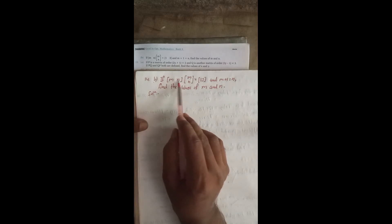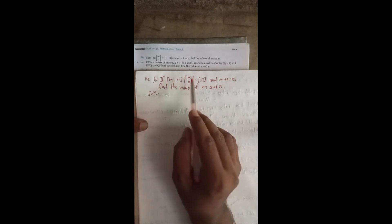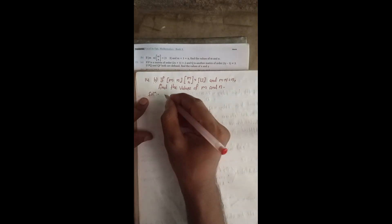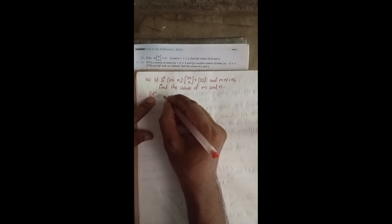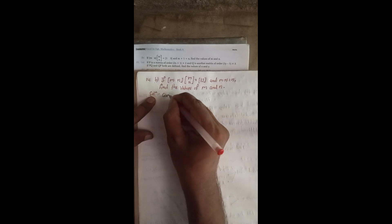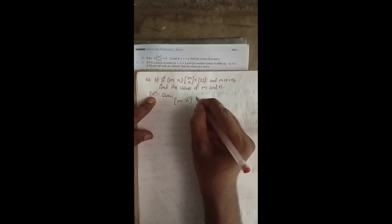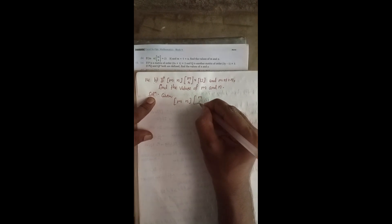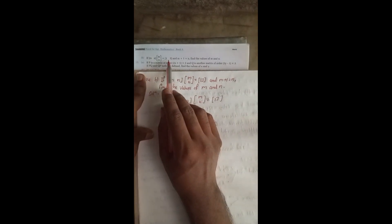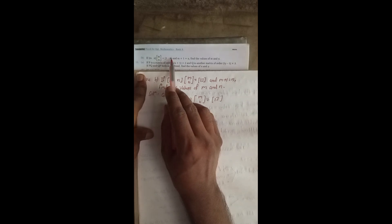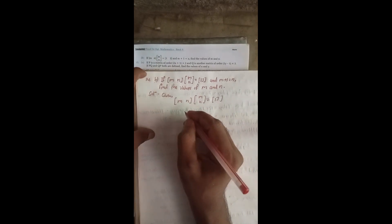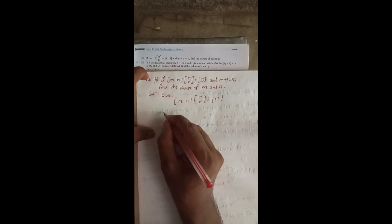This is the row matrix because there is only one row, and this is the column matrix with only one column. In the book, this is a print mistake — there is a space — it must be together. It is 13, not one-three.